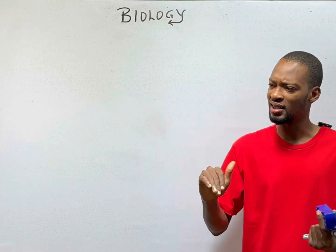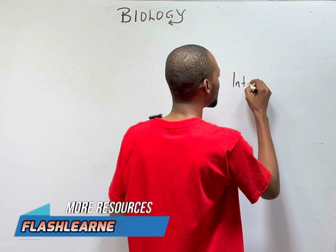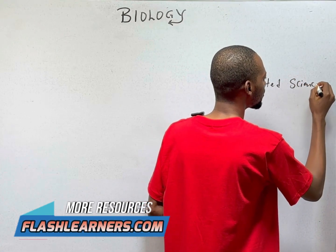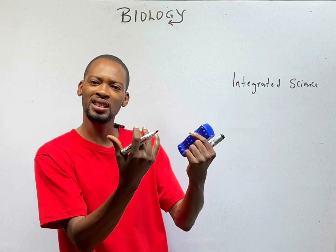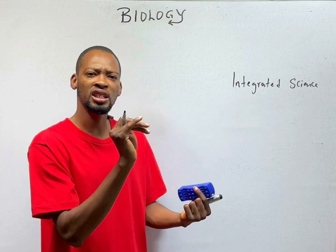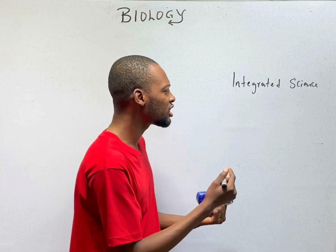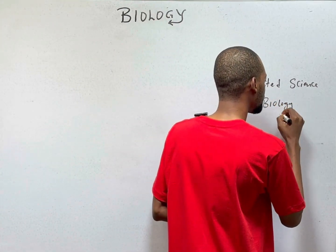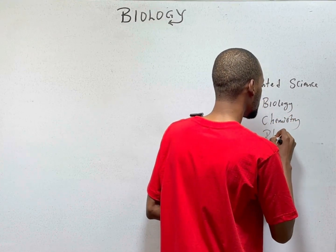In lower classes, there is a subject called Integrated Science. Integrated means combination, or putting sciences together. Integrated Science is a subject — it is a science that combines biology, chemistry, and physics.